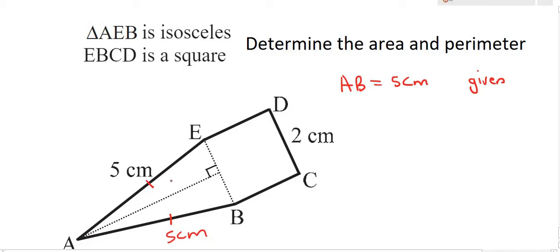Now to work out the perimeter it's going to be very easy. We know that ED is 2 centimeters. Why? Because it's a square and BC is also 2 centimeters because it's a square.